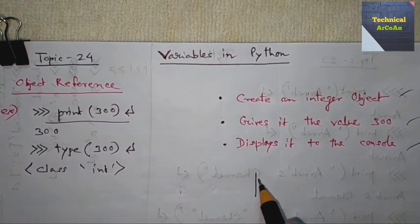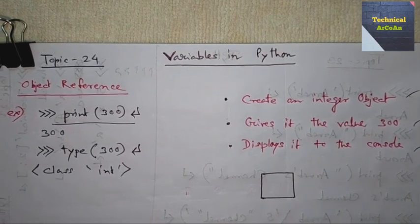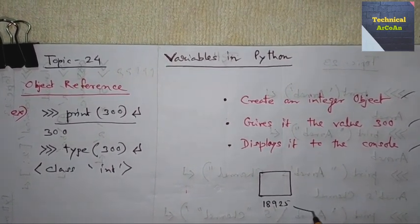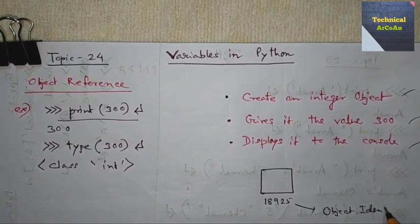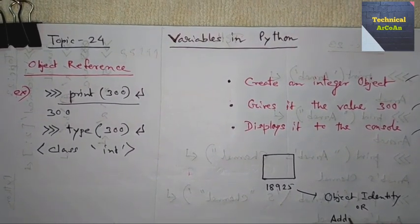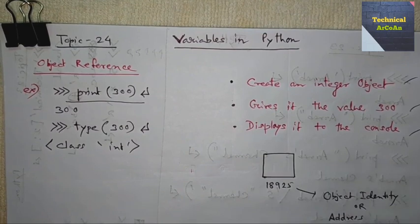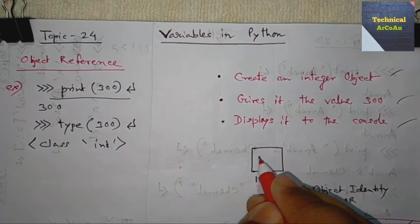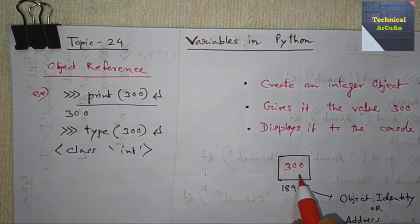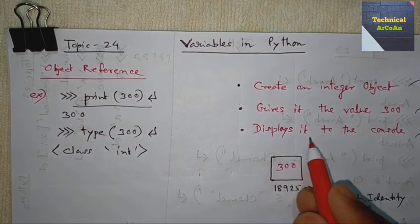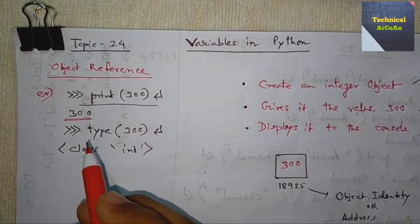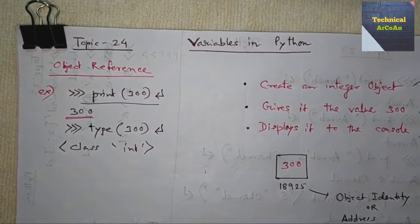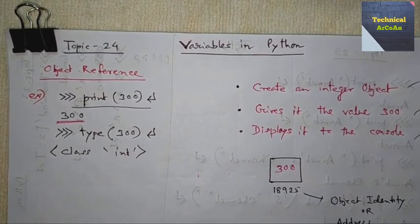When this line executes, three steps occur: first, an integer object is created in memory — suppose its object identity is 18925. Second, it is given the value 300. Third, the value 300 is displayed to the console. So an integer literal in Python is an object, and that is what object reference means.